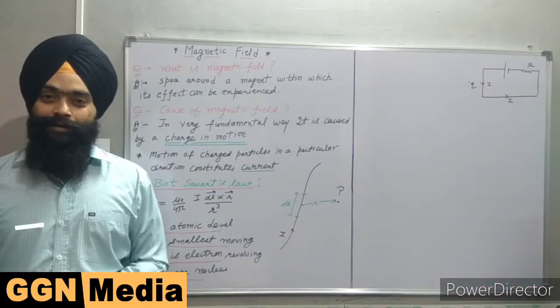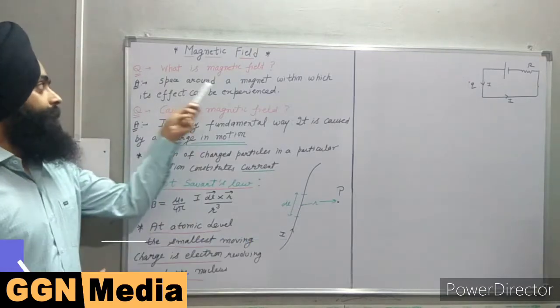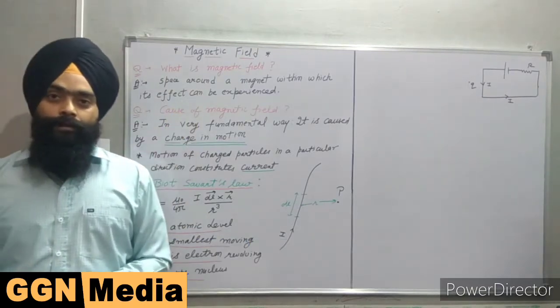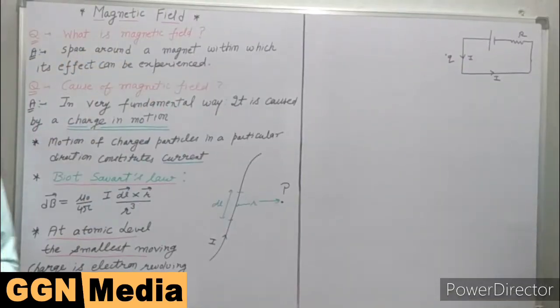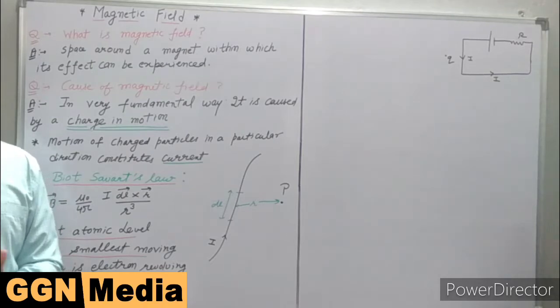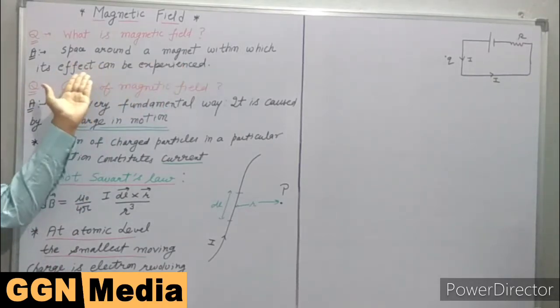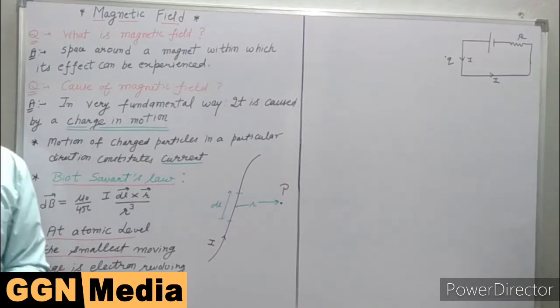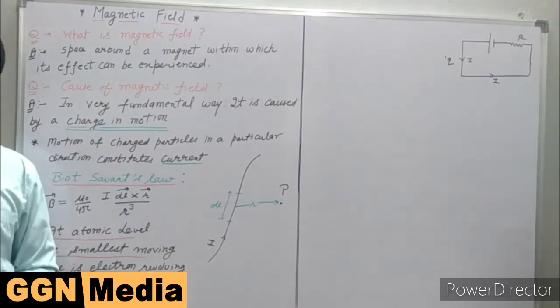Hello students, today we are going to discuss a very important topic called the magnetic field. So the first question is: what is the magnetic field? In simple words, we can say that the space around a magnet within which its effect can be experienced is called a magnetic field.